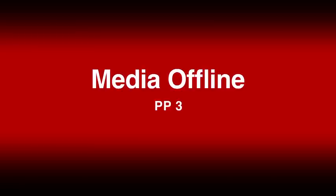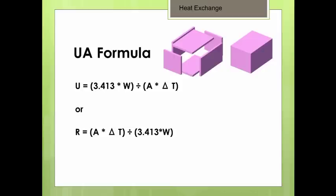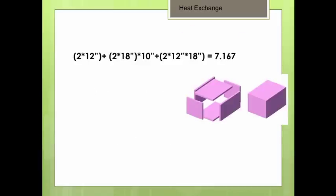So here's how we determine the R value of our rigid foam box. Remember that R value is the reciprocal of the U factor, so we can easily exchange the terms of our UA formula to calculate either. Since we're looking for the R value, let's use area times delta T divided by the product of our BTUs per watt per hour times the actual number of watts. Now for the area, we measure the inside perimeter of the box times the inside height plus the area of the bottom and the area of the top. Added all together, it equaled 7.167 square feet. Don't forget to have your students convert square inches into square feet.